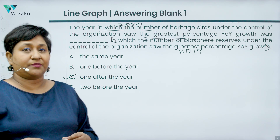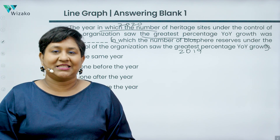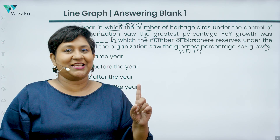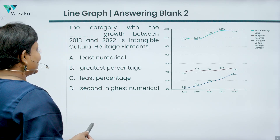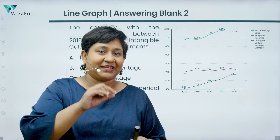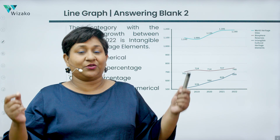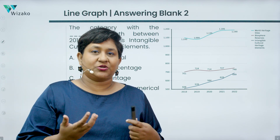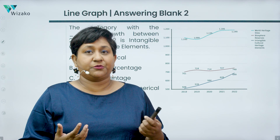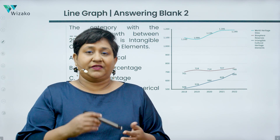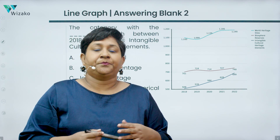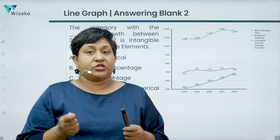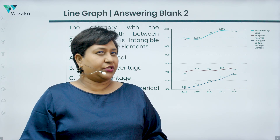So for biosphere reserves the greatest increase was in 2019, and for world heritage sites it was in 2020. Since 2020 is one year after 2019, the correct answer for the first blank is C — 'one after.' We're not done; we still have one more blank to solve, which is why we don't rush to calculate every last number but instead work smartly.